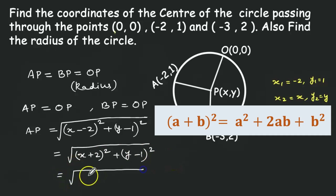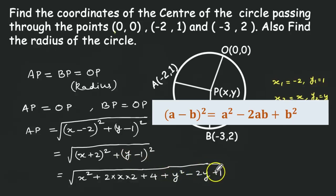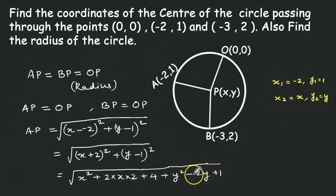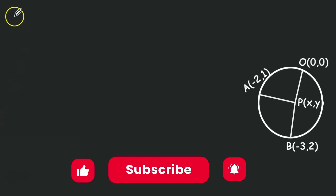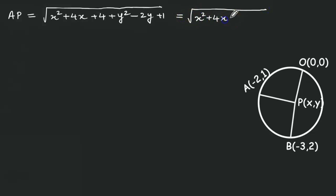Now let us expand using the algebraic identity (a plus b) squared. So (x plus 2) squared gives x squared plus 2 times x times 2 plus 2 squared, that is x squared plus 4x plus 4. And (y minus 1) squared gives y squared minus 2y plus 1. Therefore AP equals root of x squared plus 4x plus 4 plus y squared minus 2y plus 1, which simplifies to root of x squared plus 4x plus 5 plus y squared minus 2y.